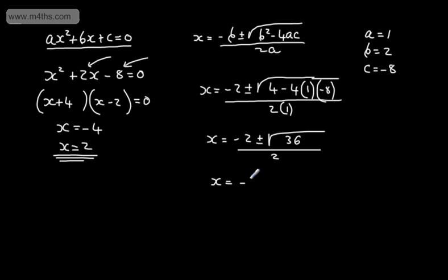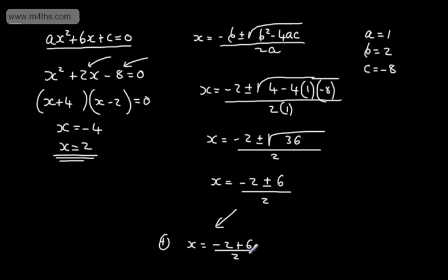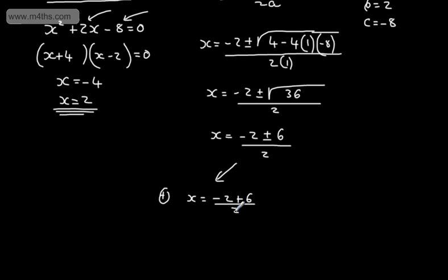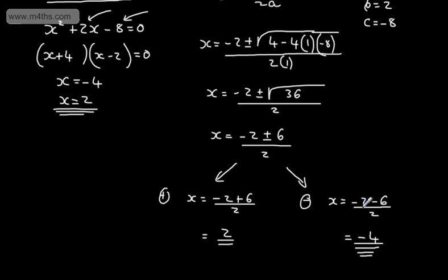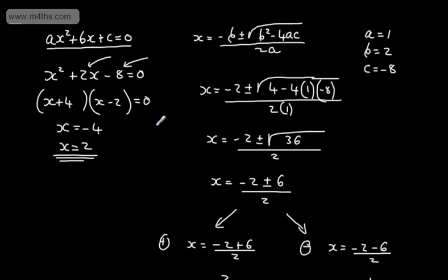Tidying this up, x equals minus 2 plus or minus the square root of: 4, then negative 8 multiplied by 4 — the two negatives give a positive — which gives 36 under the square root, all over 2. So x equals negative 2 plus or minus 6, over 2. Taking the plus: negative 2 plus 6 is 4, divided by 2 gives x equals 2. Taking the minus: negative 2 minus 6 is negative 8, divided by 2 gives negative 4. These match our earlier solutions, so it's clearly a lot easier to factor this than to use the quadratic formula.